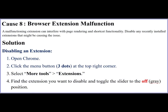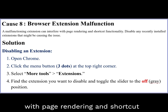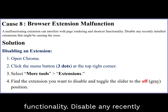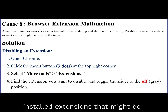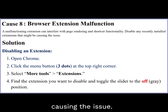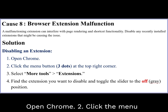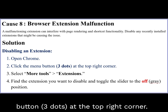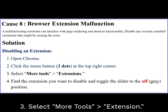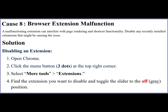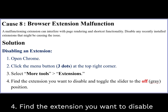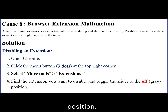Cause 8: Browser Extension Malfunction. A malfunctioning extension can interfere with page rendering and shortcut functionality. Disable any recently installed extensions that might be causing the issue. To disable an extension: open Chrome, click the Menu button (three dots) at the top right corner, select More Tools, then Extensions. Find the extension you want to disable and toggle the slider to the off (gray) position.